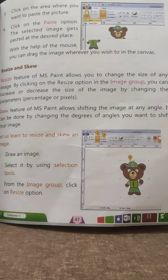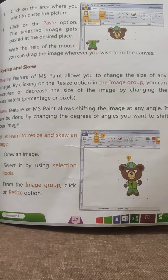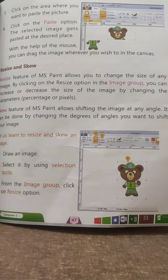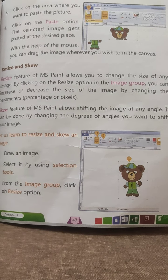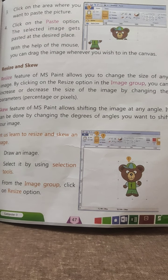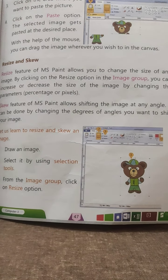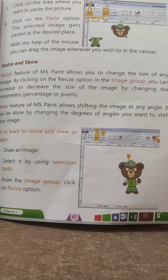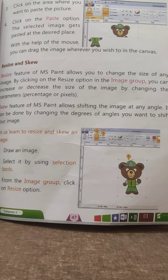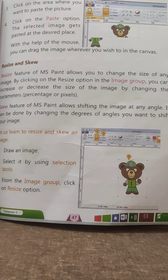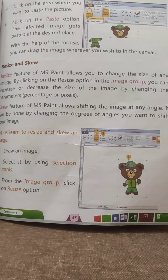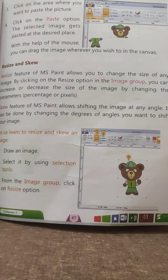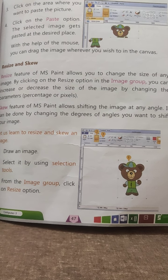Hello students, good morning. Today we are going to start with the third part of Chapter 5, that is Resize and Skew. The Resize feature of MS Paint allows you to change the size of any image. By clicking on the Resize option in the image group, you can increase or decrease the size of the image by changing the parameters, that is percentage or pixels.